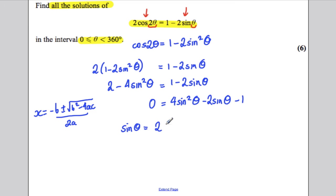You get sine theta is 2 plus or minus the square root of 4 plus 16, which is 20, all over 8. So you would get that as your possible solutions for sine theta.